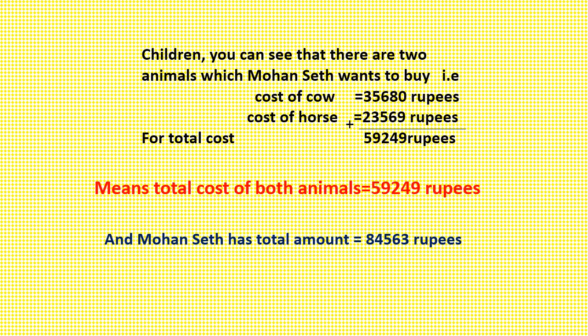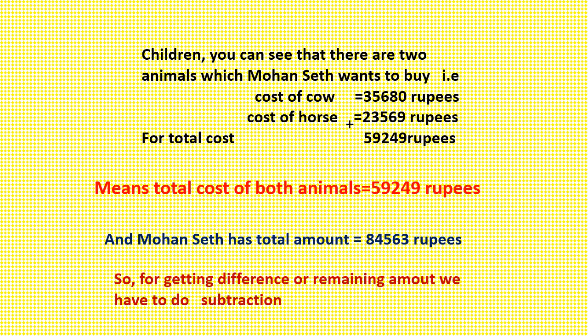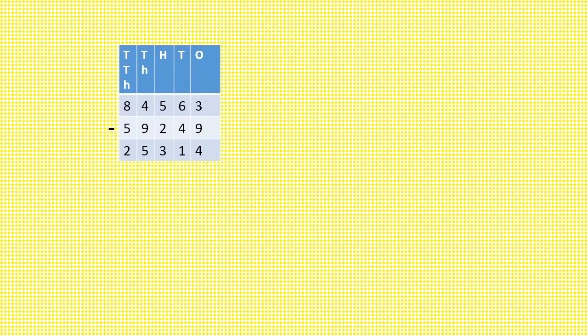And what is the total amount Mohan Seth has? As we know, 84,563 rupees. So for getting the difference, or remaining amount, we have to do subtraction. We have to subtract 59,249 from 84,563.